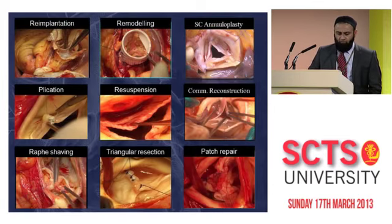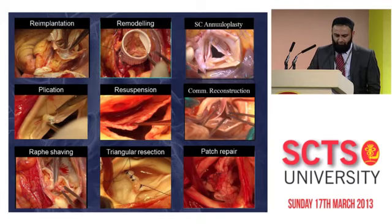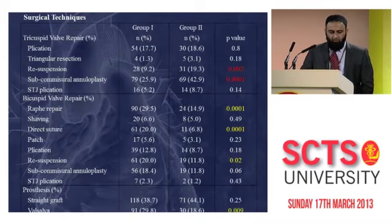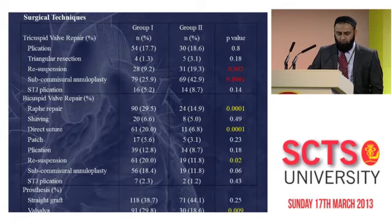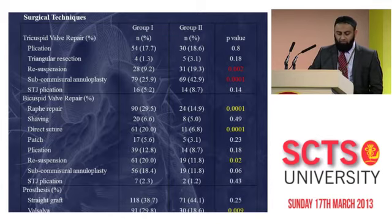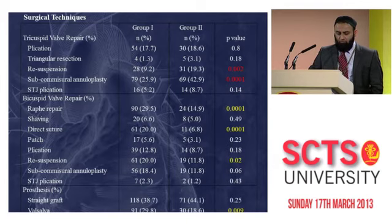We used various techniques of aortic valve repair described by Dr. David and subsequently by Dr. El Khoury. For tricuspid valve repair, when the re-suspension technique and sub-commissural annuloplasty were used, there was a high incidence of mild AI. For bicuspid valve repair, the RAFA repair with direct suture and re-suspension seemed protective against mild AI, though we don't exactly know why. With the use of a Valsalva graft, the incidence of mild AI post-operatively was significantly lower compared to a straight graft.